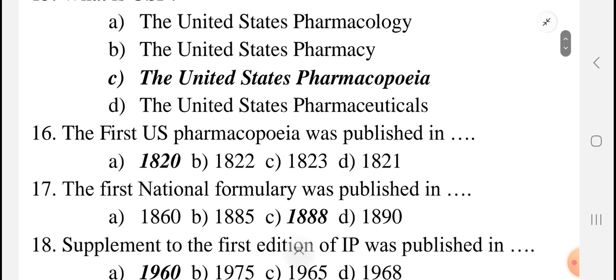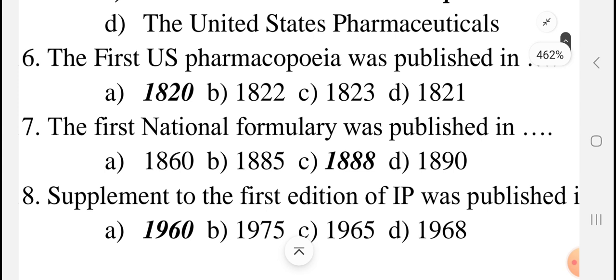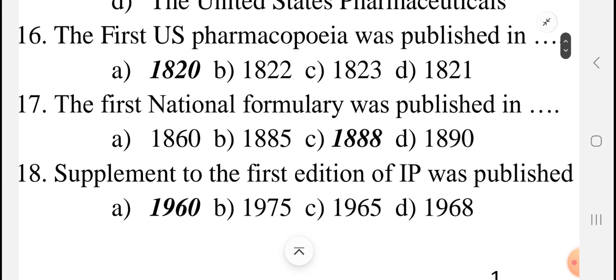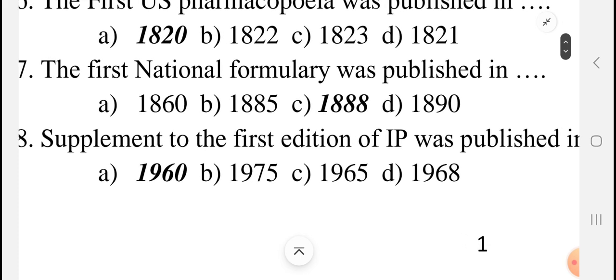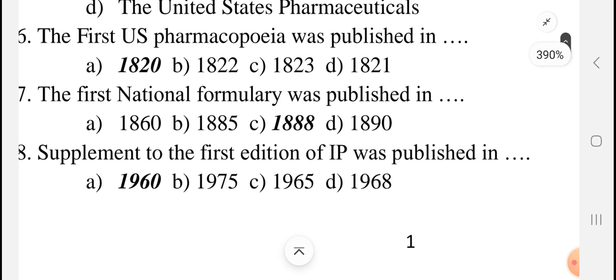The first United States Pharmacopeia was published in which year? The first USP was published in 1820. The first National Formulary, NF, was published in 1888. So: first USP is 1820, and first National Formulary is published in 1888.